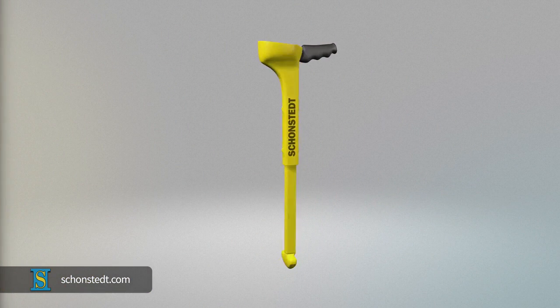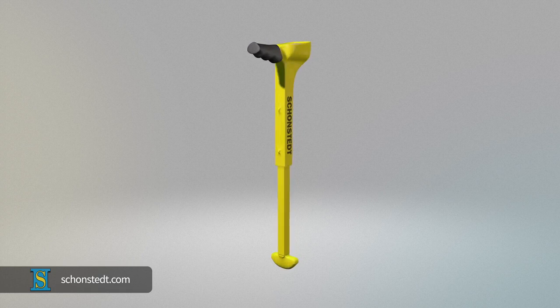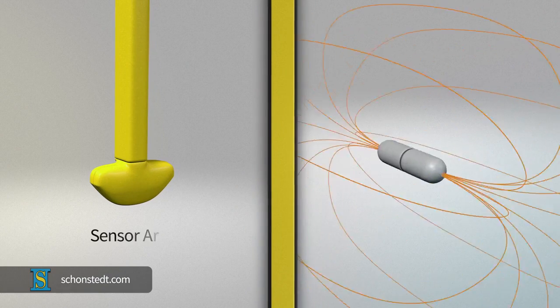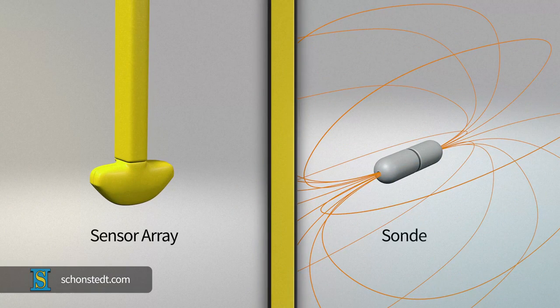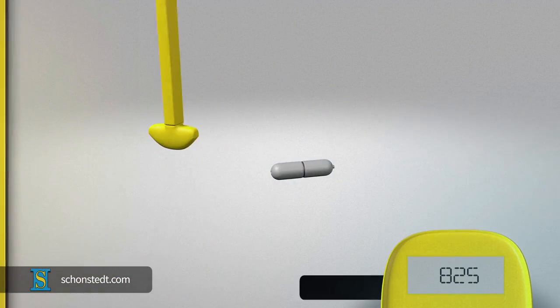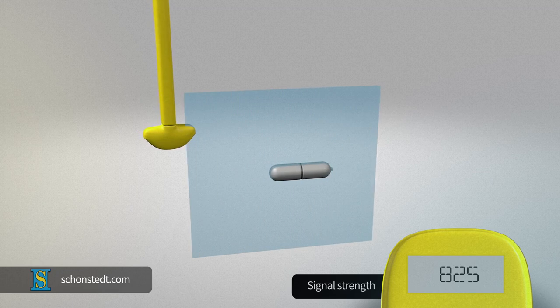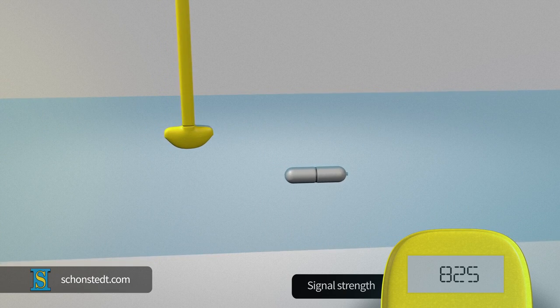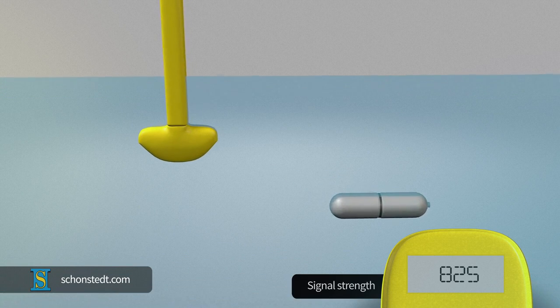In order to understand the techniques for approaching and pinpointing, it is important to understand the relationship between the orientation of the receiver sensor array and the sonde. The signal detected by the sensor array is strongest or peak when the axis of the sonde and the axis of the sensors in the receiver are on the same plane.